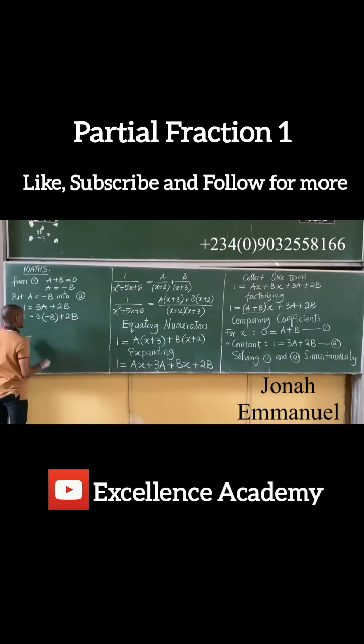From here, it means that 1 equals 3 times minus B, which is minus 3B plus 2B. So 1 equals minus 3B plus 2B, which gives minus B.